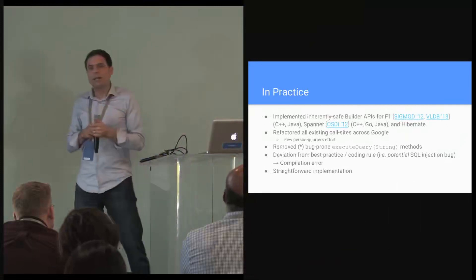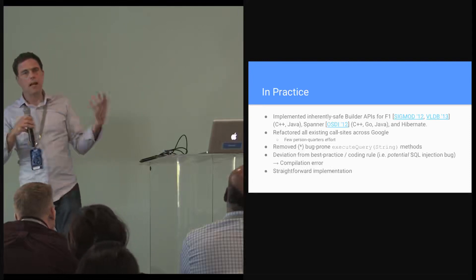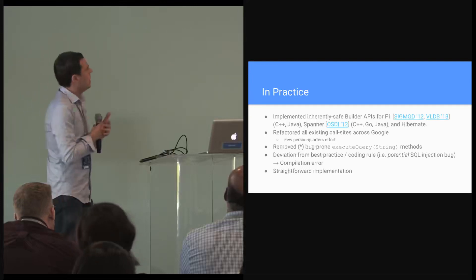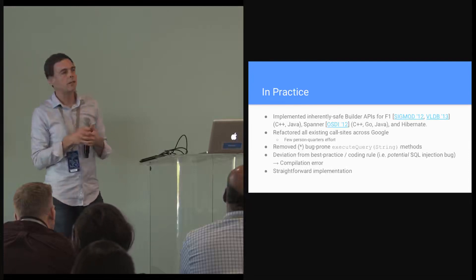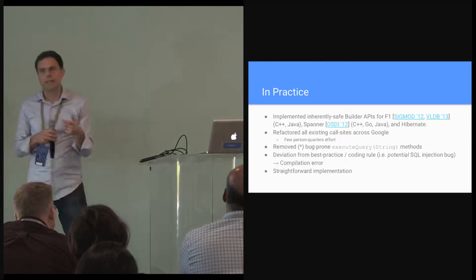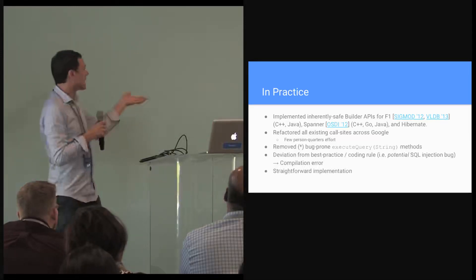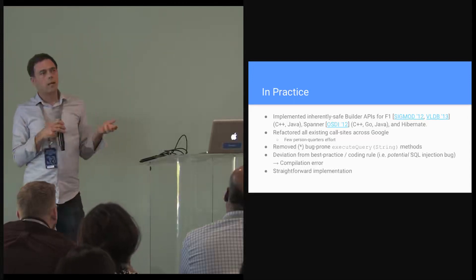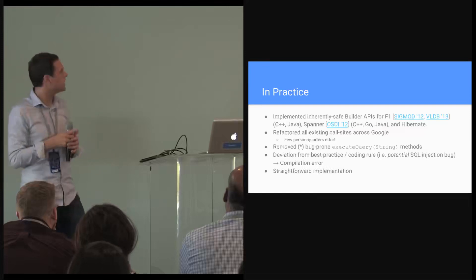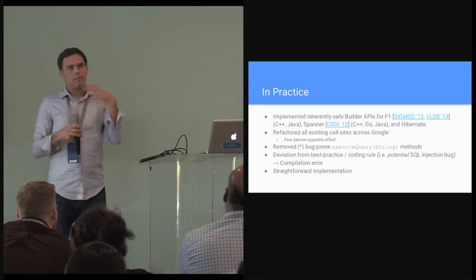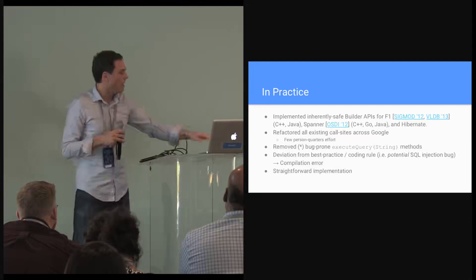In terms of practical results, we implemented builder APIs in this style for databases in use at Google — including F1 and Spanner, which are planet-scale databases backing user-facing applications, and Hibernate, which is more frequently used in internal-facing applications. We then did a global refactoring of all existing client code of the original query APIs to use the new safe query builder API. This was a couple of person-quarters of effort, but it wasn't that hard because the structure of the old code and new code is basically the same. In some cases it was even automatable. And considering there are probably thousands of developers writing code at Google against these APIs, a few person-quarters to clean up is a very modest effort.